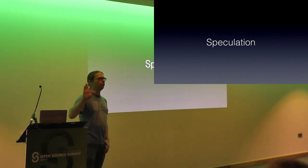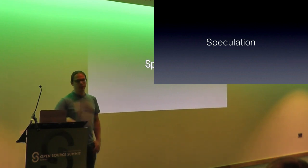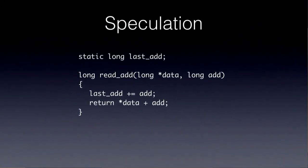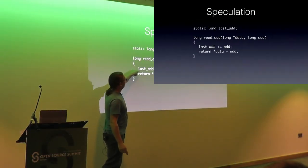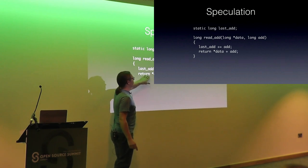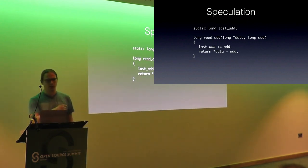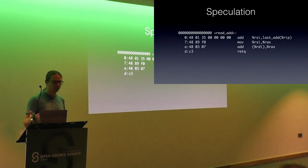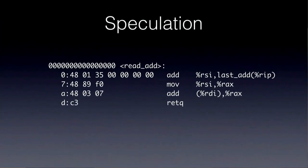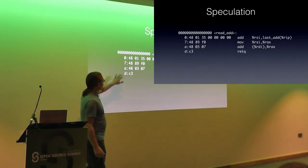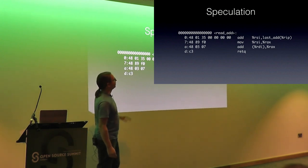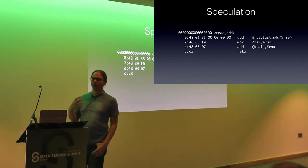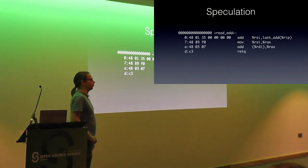So if you know what CPU speculation really does — I need to go into a bit of detail. This is a simple C snippet, just a simple C function that takes a pointer, adds a number to a global variable, and returns an addition of that number and the dereference of that pointer. In reality, when your CPU executes this, it doesn't execute C code — it executes assembly, or rather the opcodes.